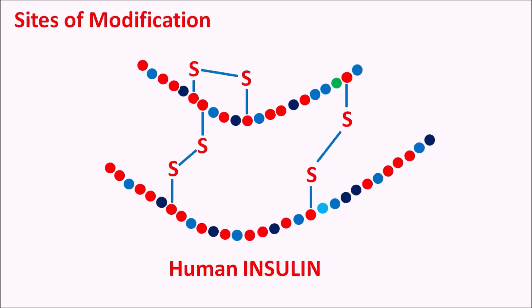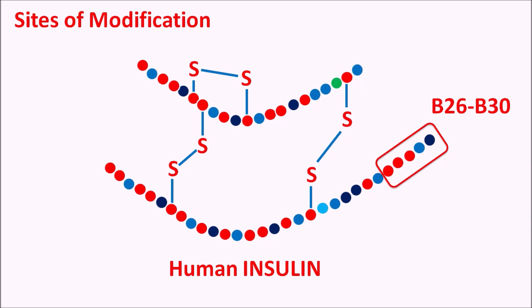First, let us see the sites of modification within the human insulin structure. The B chain is a good site for modification — specifically the C-terminal of the B chain, consisting of 5 amino acids from B26 to B30. This site is not responsible for the pharmacological action of insulin, so it can be safely modified to produce various insulin preparations with different pharmacokinetic parameters.